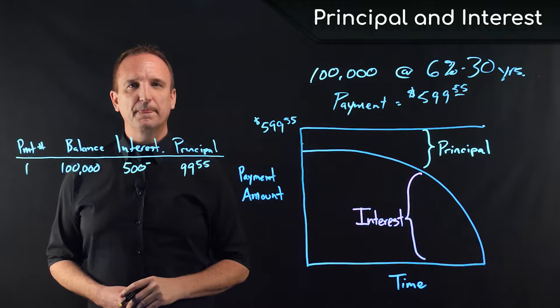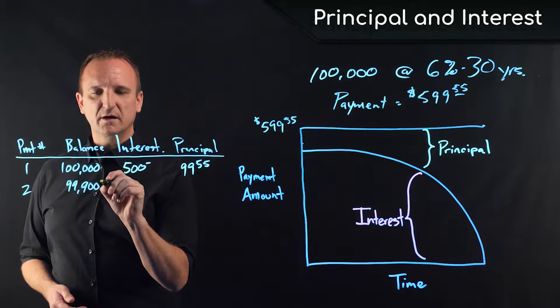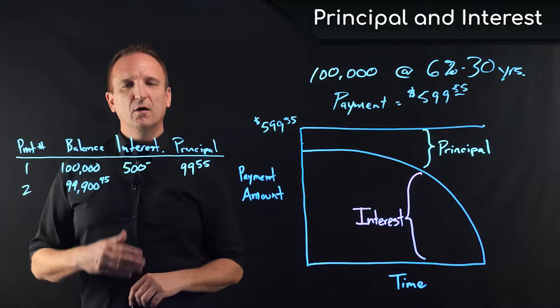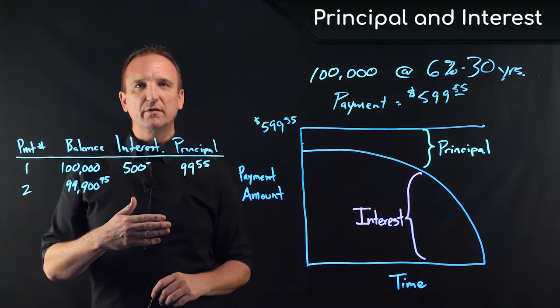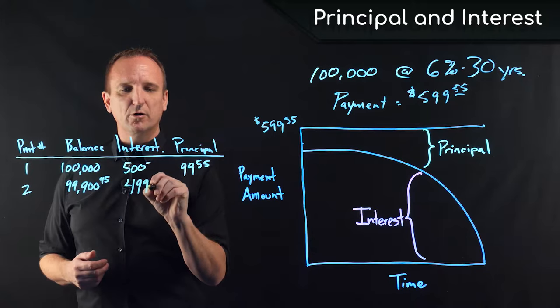Since $99.55 was paid toward the principal, then when the second payment is due, the new balance on the loan is $99,900.45. So with the second payment, 1.5% or 6% annually, 1.5% per month is due on the new balance of $99,900.45, which means that half a percent of that would be $499.50.